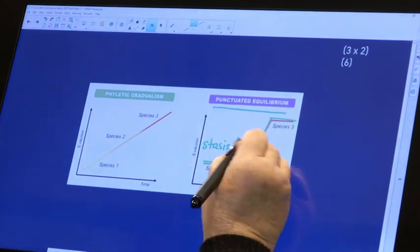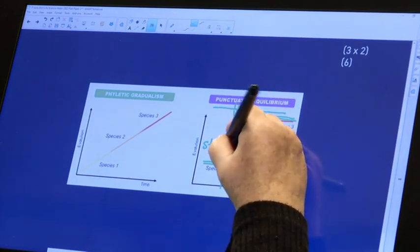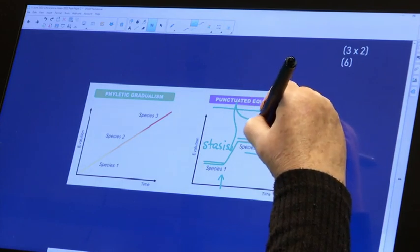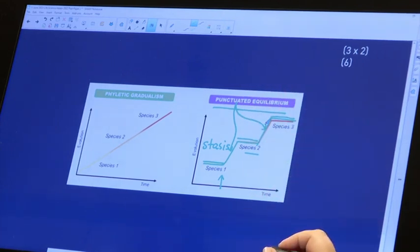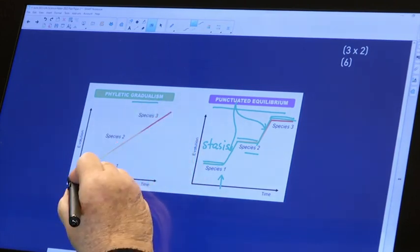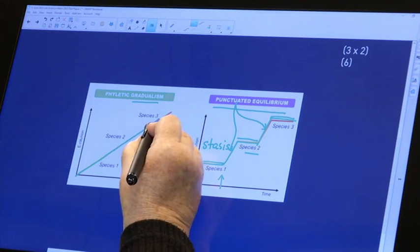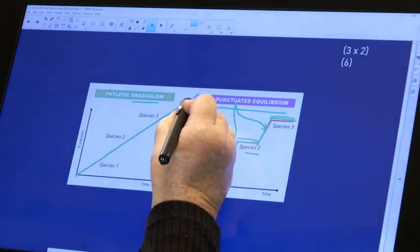We've got periods of equilibrium or no change punctuated or broken by periods of rapid change. Unlike gradualism which Darwin proposed, one species gradually becomes another and so on.